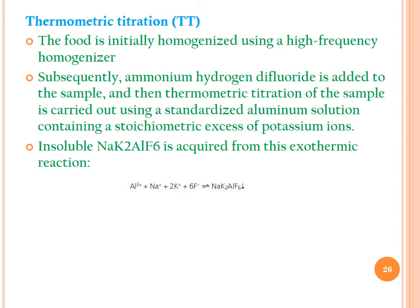For TT analysis of sodium, the food is initially homogenized using a high-frequency homogenizer. Subsequently, ammonium hydrogen difluoride is added to the sample, and thermometric titration is carried out using a standardized aluminium solution containing a stoichiometric excess of potassium ions. Insoluble sodium-potassium-aluminium fluoride is acquired from this exothermic reaction. The resulting temperature rise is recorded, and the equivalence point is determined by drawing tangent lines on the temperature versus titrant volume graph.